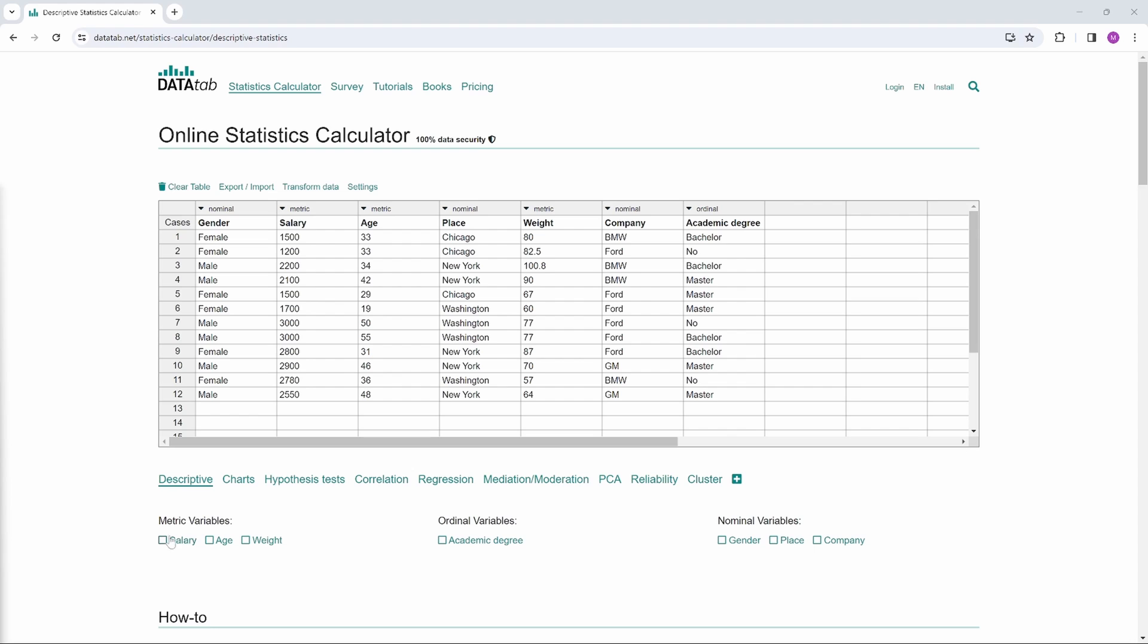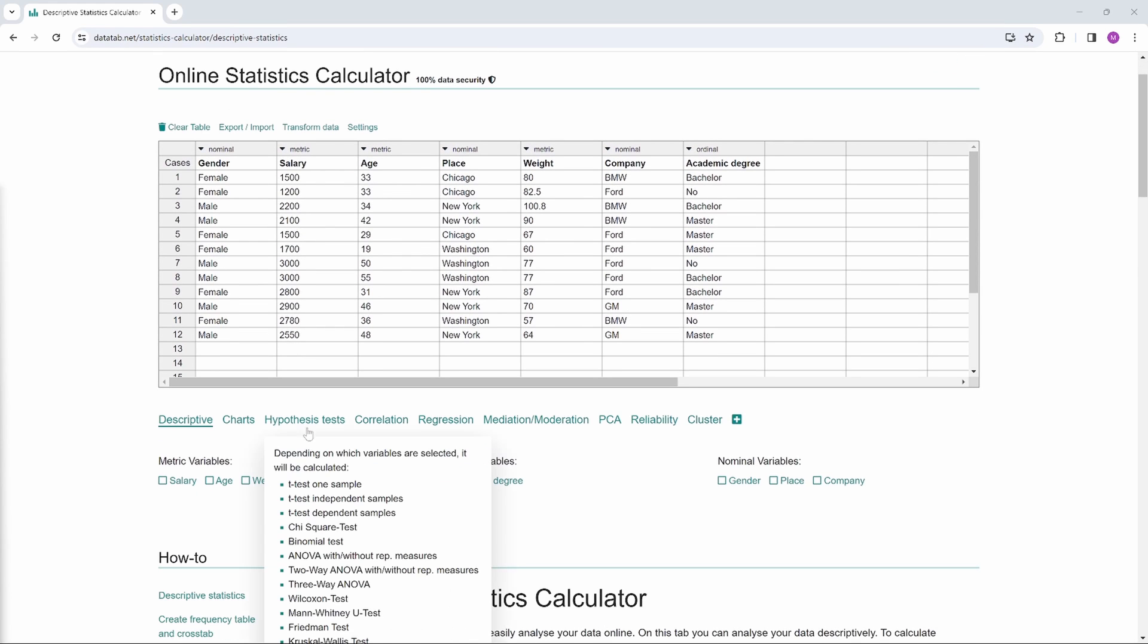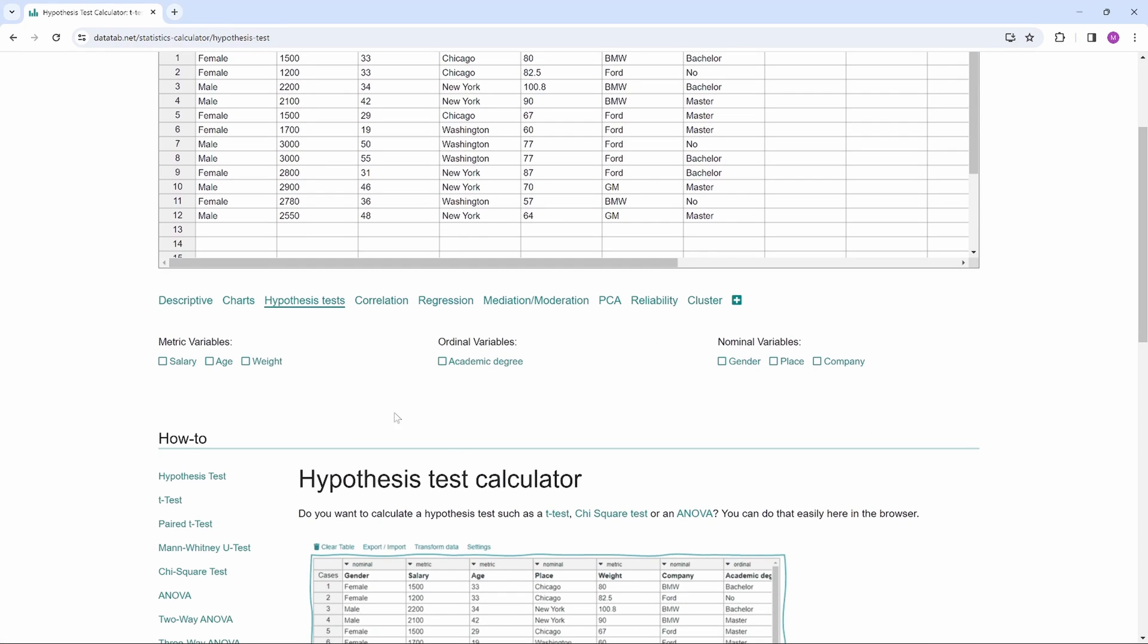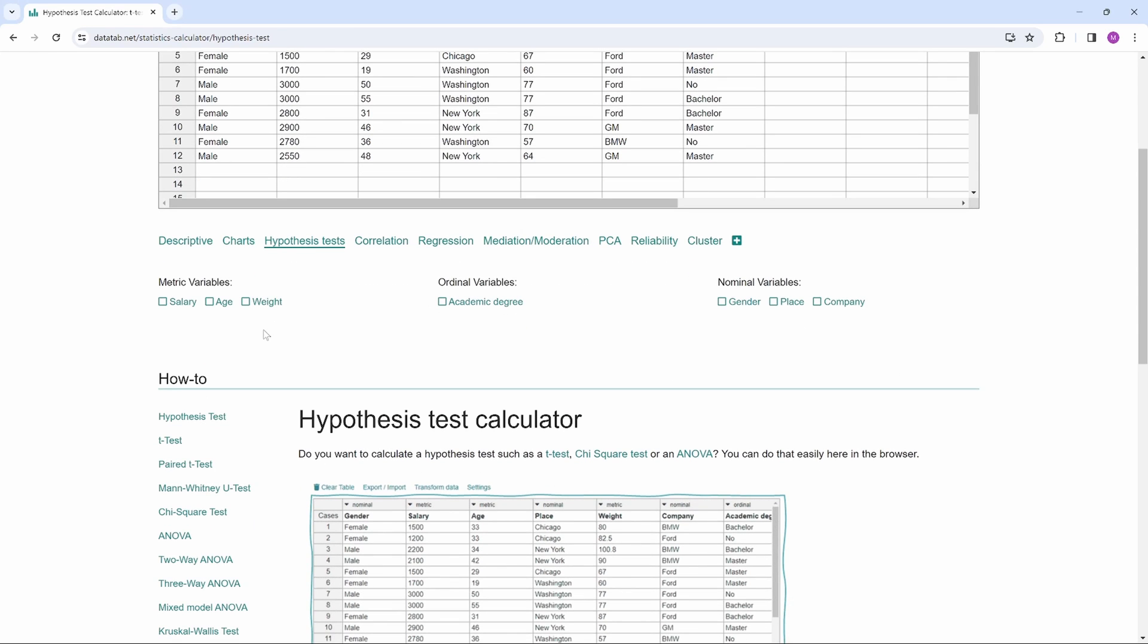DataTab automatically tries to determine the correct level of measurement, but you can also change it up here. Now we just click on hypothesis testing and select the variables we want to use for the calculation of a hypothesis test. DataTab will then suggest a suitable test.